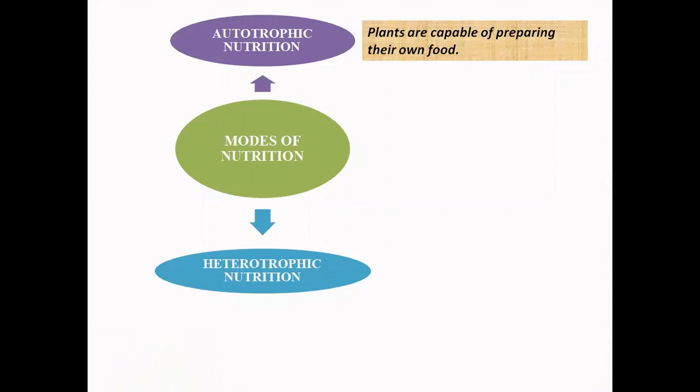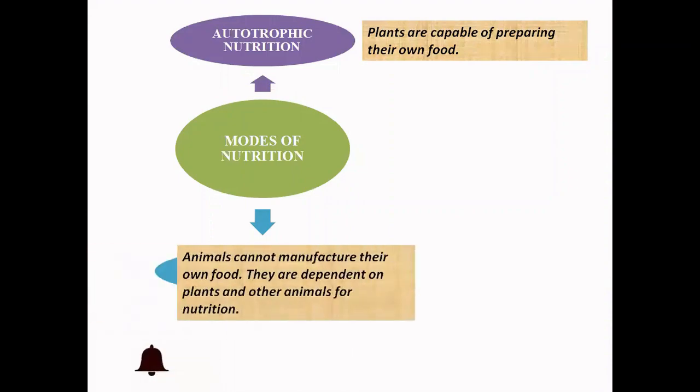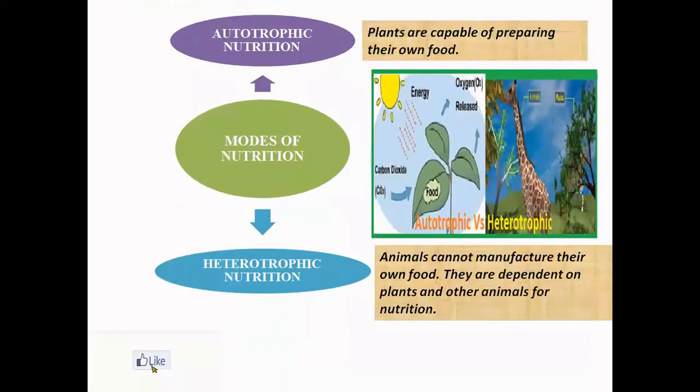Next we have heterotrophic nutrition. Who falls in this category? The animals. Animals cannot manufacture their own food. They are dependent on the plants and other animals for nutrition. All the animals are known as heterotrophs, and so the heterotrophic nutrition is the mode of nutrition in which an organism obtains its food from the autotrophs and other heterotrophs.